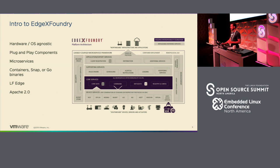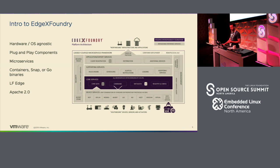You can run them as containers — we have some Docker files you can use. You can run them as Snap, though we haven't built a Snap for ARM64 yet, so you can't use it on Raspberry Pi. You can also run the Go binaries, but in the case of the Raspberry Pi, it takes a long time to build — not recommended. It's under the LF Edge, recently announced, and it's Apache 2.0.